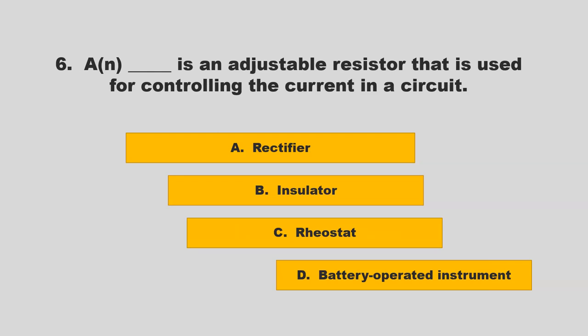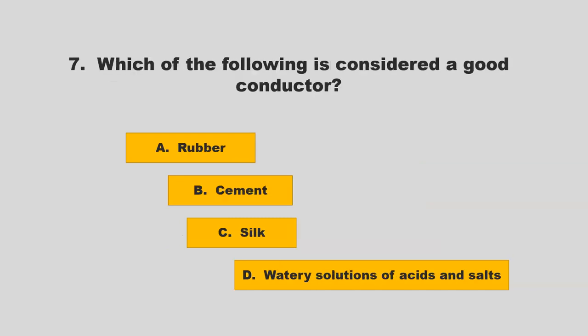A blank is an adjustable resistor that is used for controlling the current in a circuit. Is it rectifier, insulator, rheostat, or battery operated instrument? If you chose C, rheostat, you are correct.